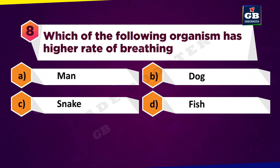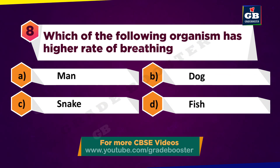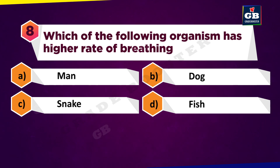Which of the following organisms has the higher rate of breathing? A. Man, B. Dog, C. Snake, D. Fish.